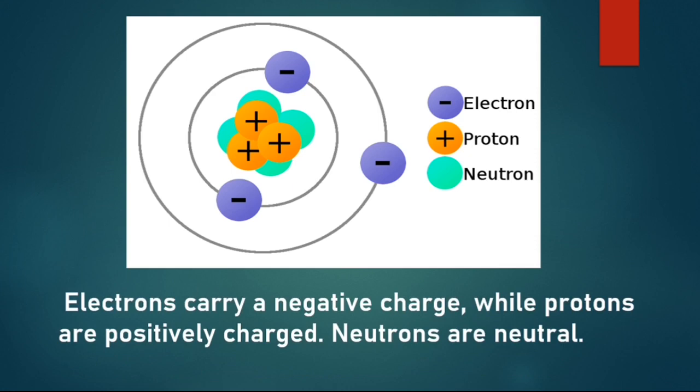Electrons always carry a negative charge, while protons are always positively charged. Neutrons, true to their name, are neutral—they have no charge. Both electrons and protons carry the same amount of charge, just a different type.